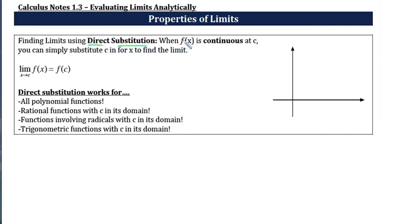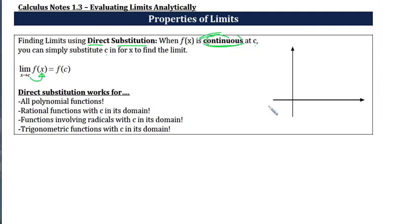When f of x, our function, is continuous at point c, you can simply substitute c in for x to find the limit. The limit of our function f of x as x approaches c is f of c — meaning you just plug c in for x in the function and whatever answer you get out is the limit. This idea of continuity we'll talk about a little bit later in the chapter.